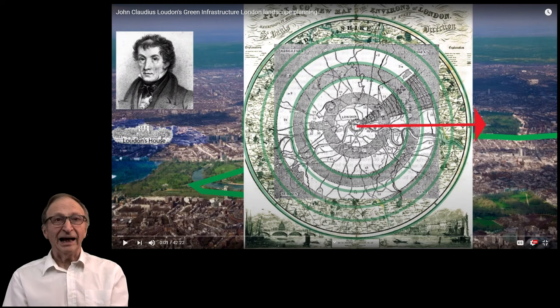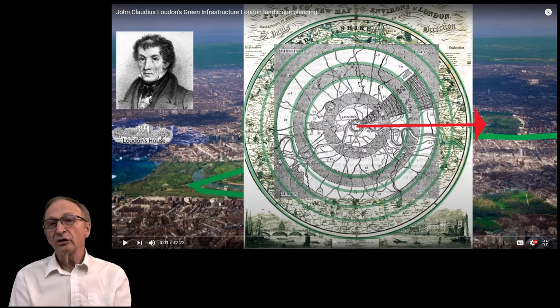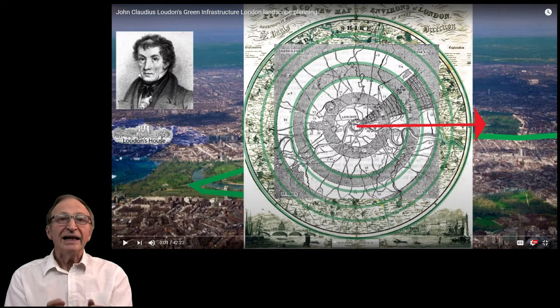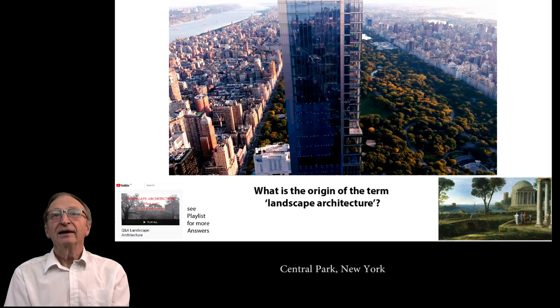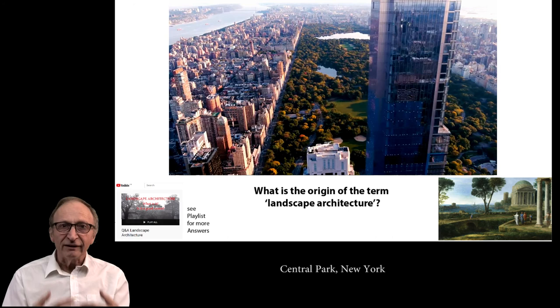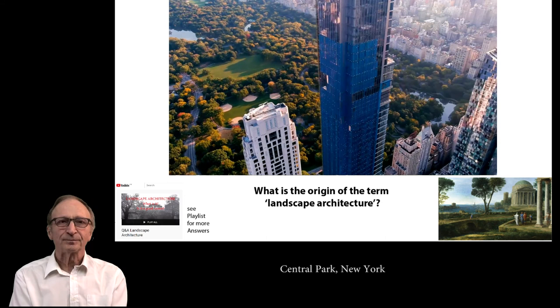Second, the interest in preparing forward-looking plans for green open space comes from John Claudius Loudon and Frederick Law Olmsted. Loudon proposed concentric breathing zones to be created round London as it grew — we call them greenbelts. Olmsted created what Laurie Olin, a famous landscape architect, described as 'the greatest work of art in America': Central Park in New York City.